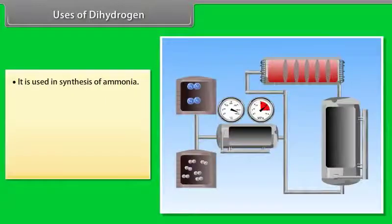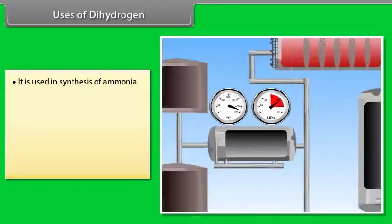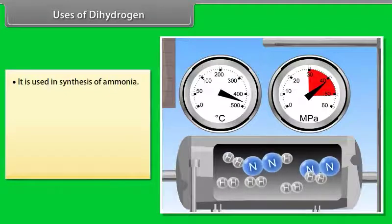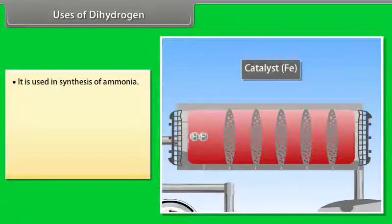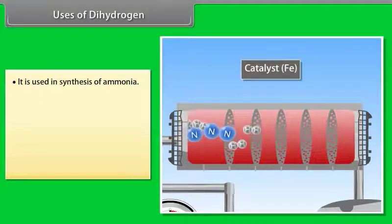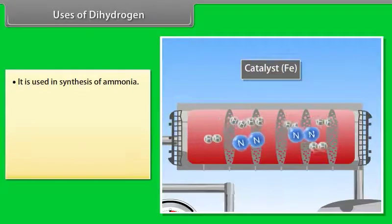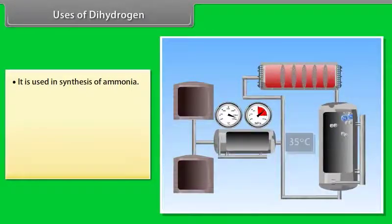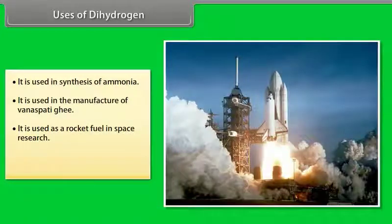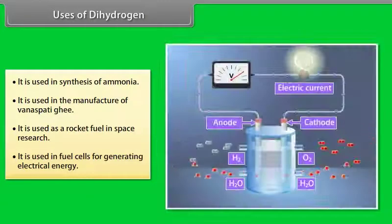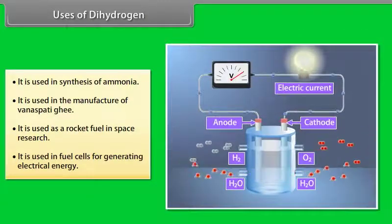Uses of dihydrogen. It is used in synthesis of ammonia. Nitrogen and hydrogen passed to heater, where these are heated up to a certain temperature. After that, they are compressed and then passed to heater, where the reaction takes place. After that, the mixture is passed to waste heat boiler, from which ammonia is cooled and then stored, and nitrogen and hydrogen are recycled. It is used in the manufacture of Vanaspati Ghee. It is used as a rocket fuel in space research. It is used in fuel cells for generating electrical energy.